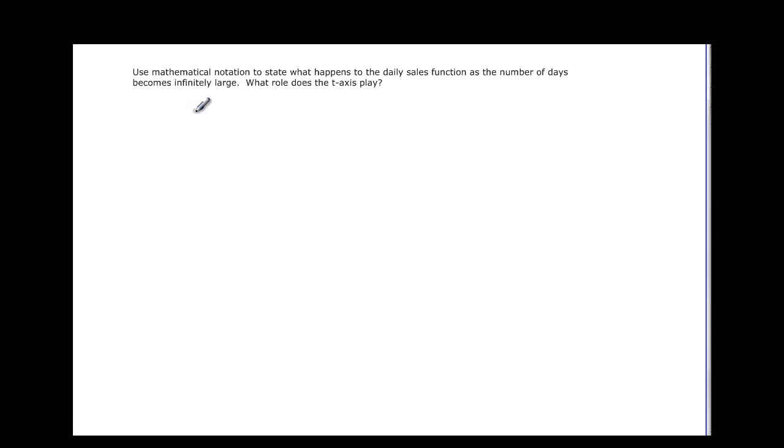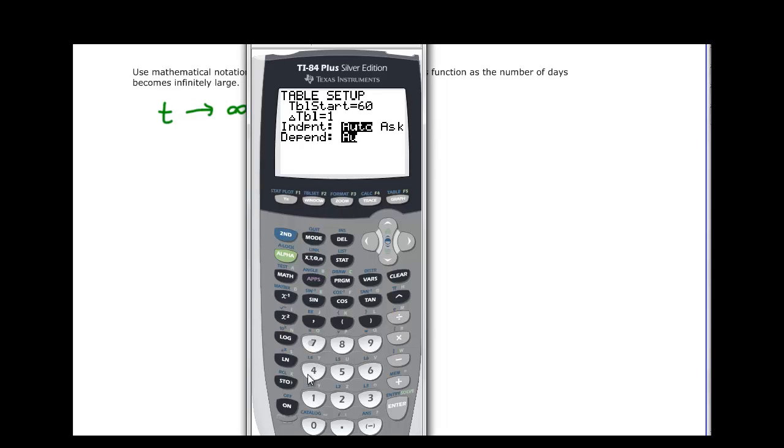Use mathematical notation to state what happens to the daily sales function as the number of days becomes infinitely large. If we look at that in our table, as t goes to infinity, bring back that calculator. Let's say like 10,000 or even bigger. What does our table show? It's showing us 2.3 times 10 to the negative 4. That's three zeros in front of that 2, so we would call that close enough to be 0.